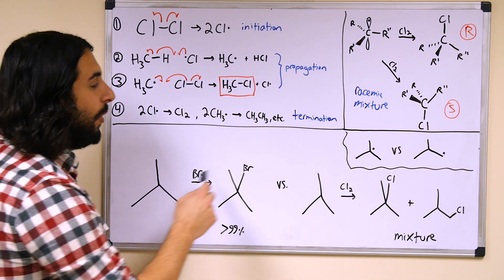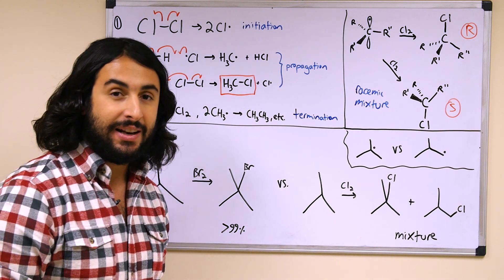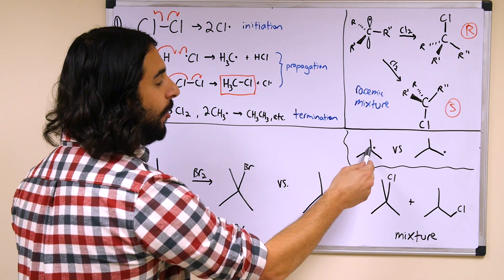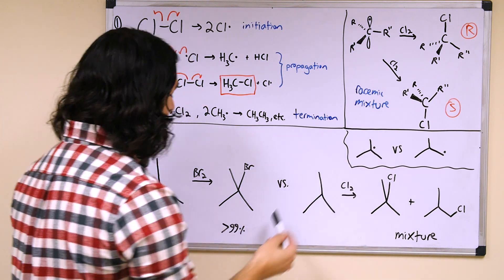That means that when a bromine is added, it's going to add in that position because that's where the radical is. That's why we're going to get almost exclusively the tertiary bromo alkane.